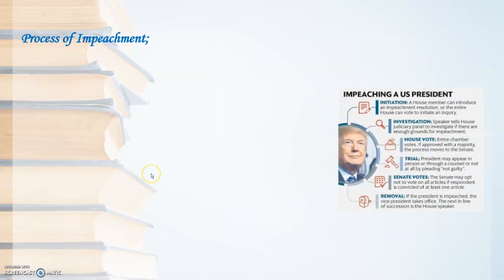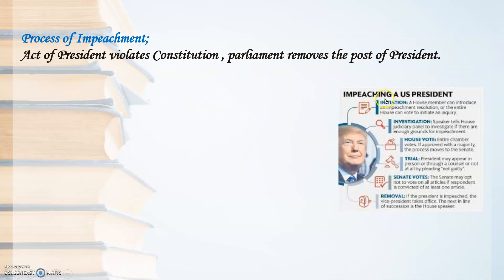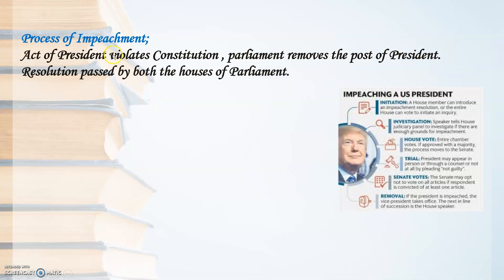There is something called the Process of Impeachment. If the President is found not doing his job properly, is under corruption, or is not doing his work properly, the Parliament — meaning the two houses, Lok Sabha and Rajya Sabha, along with the Council of Ministers and Prime Minister — have the total right to remove the President from his post. That is called the Process of Impeachment.